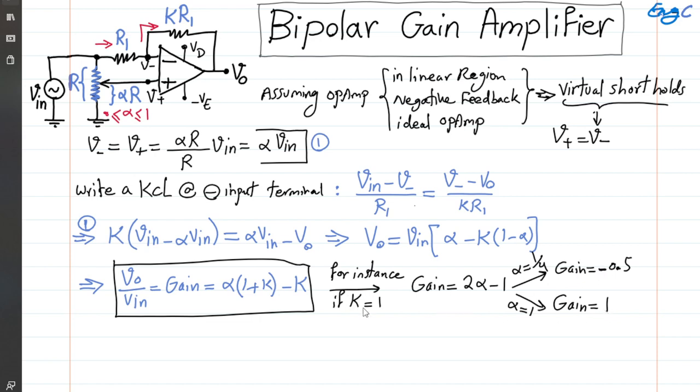In this example scenario where K equals 1, the gain becomes 2*alpha - 1. Playing with alpha between 0 and 1: alpha = 1/4 gives gain = -0.5, and alpha = 1 gives gain = 1. You can see the gain can be negative or positive depending on what we set.